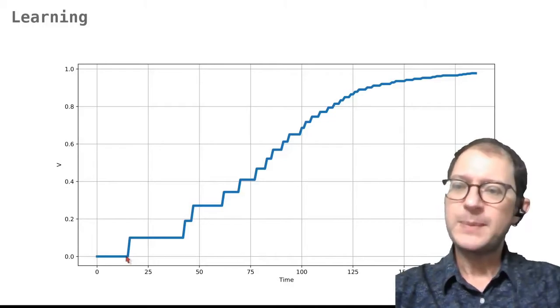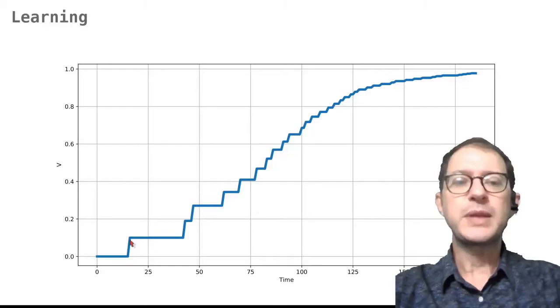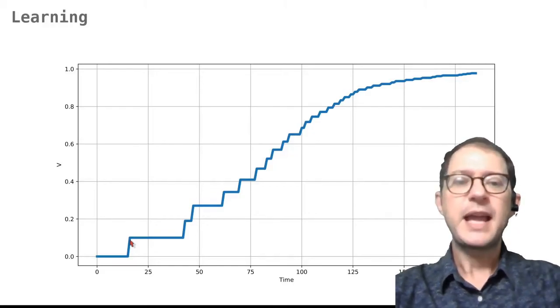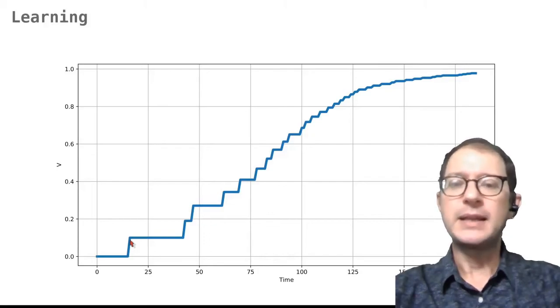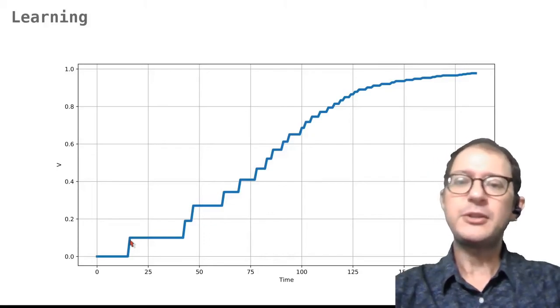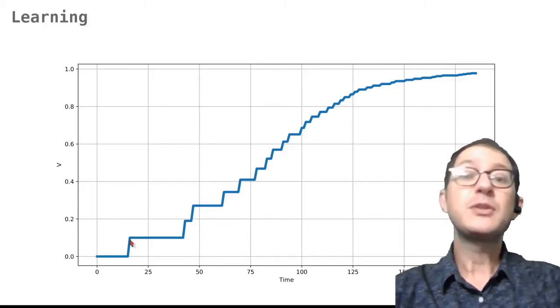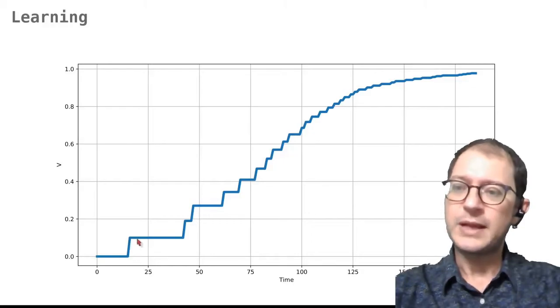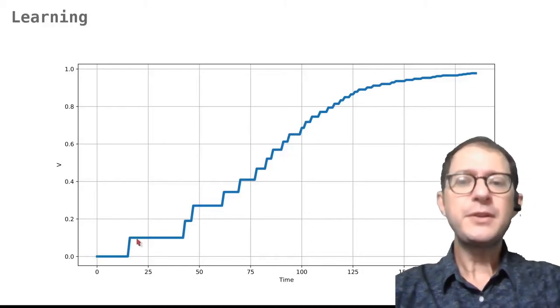At this point, we can see that the associative strength jumps from 0 to 0.1. This is exactly what you expect from the Rescorla-Wagner learning rule, because in this example I am using a lambda value of 1 and a combined alpha and beta terms of 0.1. So the error is 1 and the learning rate is 0.1, and multiplied together they give a jump of 0.1 here.